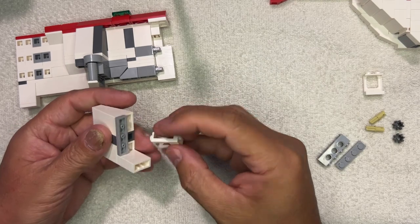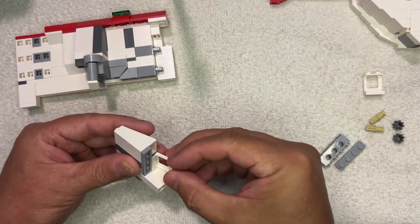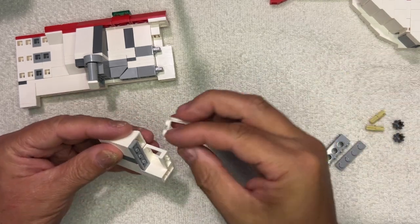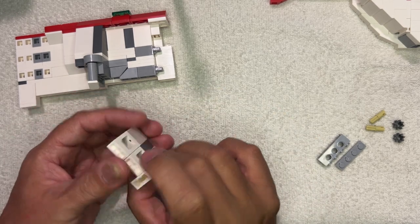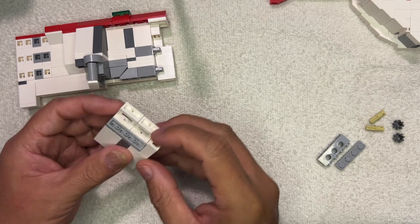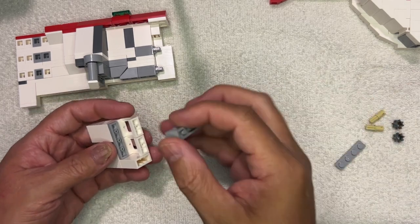And then there's two of these white window looking things. Like that. There we go. Then I need this piece.